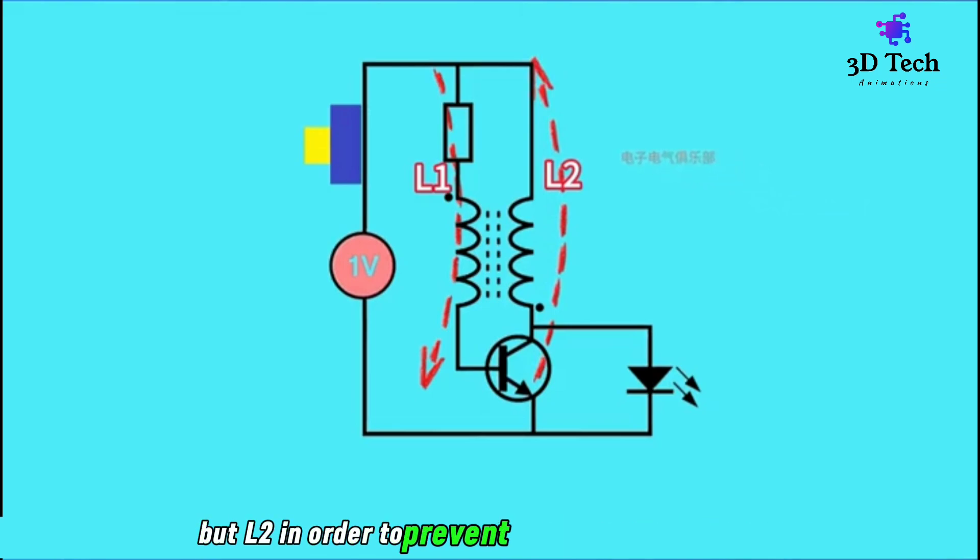But L2, in order to prevent the increase of current, produces an induced voltage with a positive top and negative bottom.